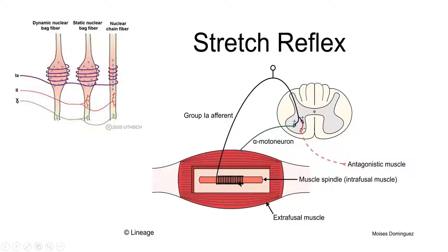When the muscle spindle is stretched, the sensory neurons fire. This is the Group 1A sensory neuron; through the dorsal root it enters the CNS and directly synapses with the alpha motor neuron, stimulating the same group of extrafusal muscles to contract. This type of synapse is called a monosynapse — the sensory neuron directly synapses with the motor neuron.